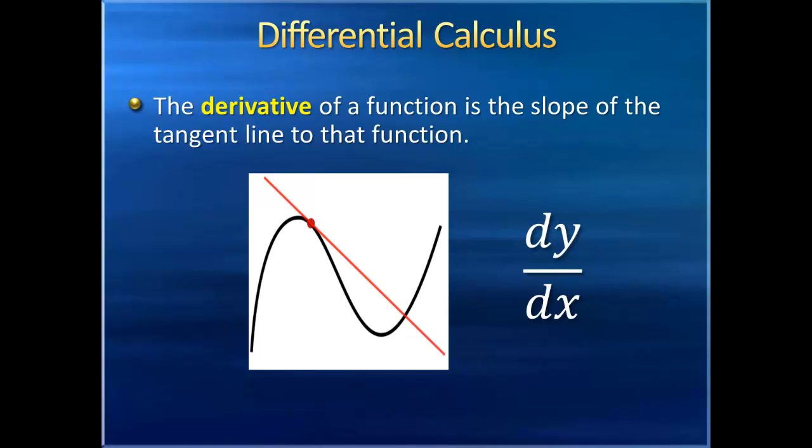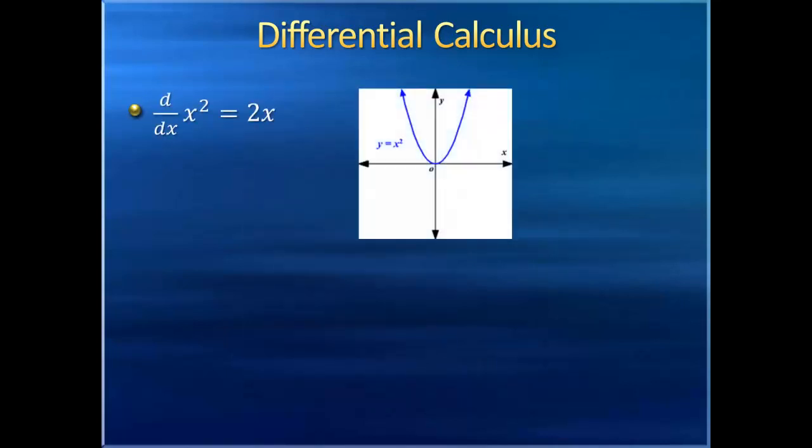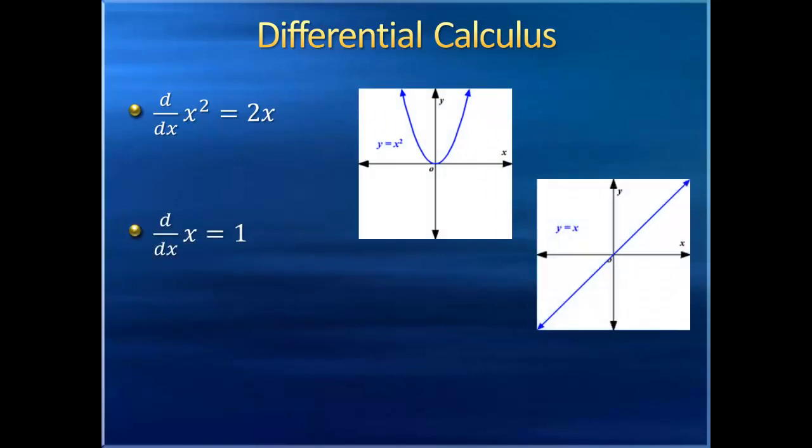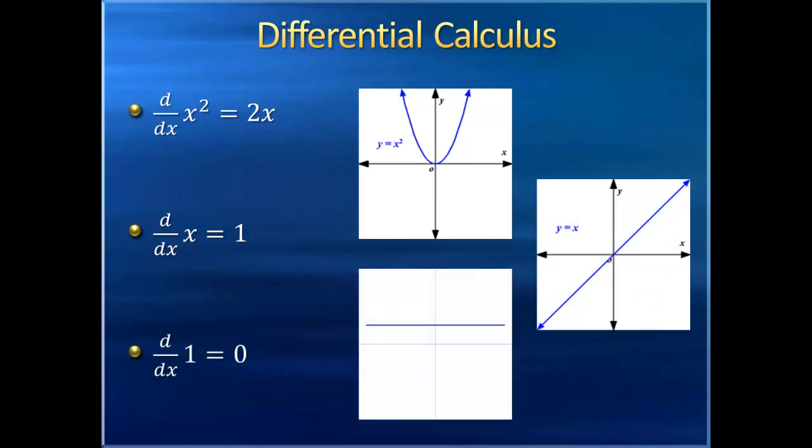Since functions can have all sorts of ups and downs, the derivative will change at various points along a function. This opens up all sorts of new relationships between functions. For instance, the derivative of a quadratic function can be described as a linear function. The derivative of a linear function is a constant, since the slope is just a single number. And the derivative of a constant function, a horizontal line, is zero.